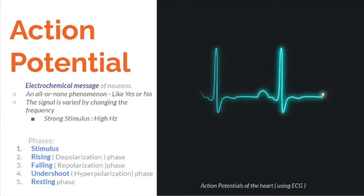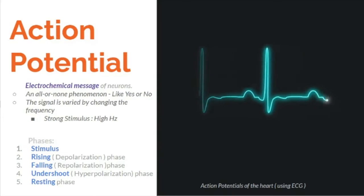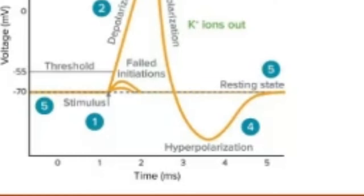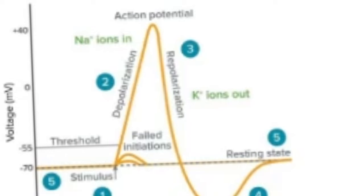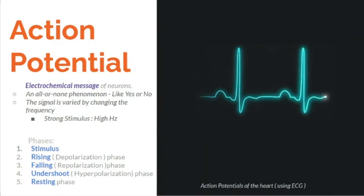There are five phases of an action potential. Phase one: stimulus — the stimulus starts the rapid change in voltage. Sufficient current must be administered to raise voltage above the threshold to start membrane depolarization. Phase two: the rising phase or depolarization — caused by a rapid rise in membrane potential and opening of sodium channels, resulting in a large influx of sodium ions.